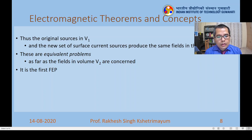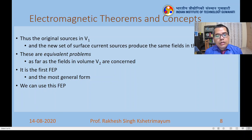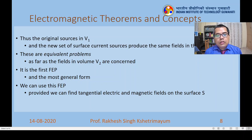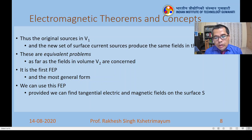These two fields should be the same. This is the first field equivalence principle and it is the most general form. We can use this principle when we can find the tangential components of both the electric and magnetic fields on surface S — from those tangential components we derive the magnetic current density and electric current density, and then find the fields everywhere in volume V2. In the next two field equivalence principles, we may not be able to find the tangential electric field or the tangential magnetic field; those two cases will be discussed in the next class.